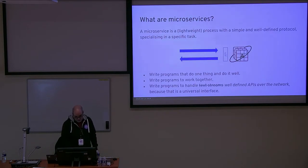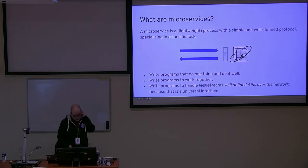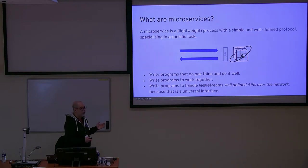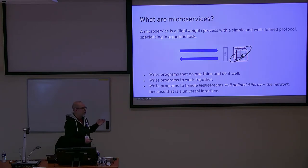A modern architecture that follows very loosely this Unix philosophy is a microservice architecture. A microservice today has many things in common with the Unix philosophy: we write programs or processes that do one thing and do it well, and we write services that work very well together. But this time we're not using a text stream — we're being more general, using well-defined APIs over the network, because that is the universal interface.